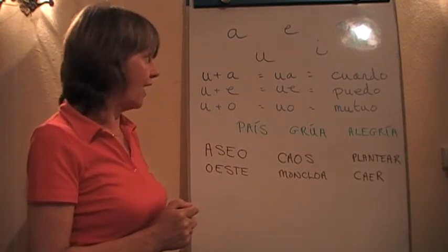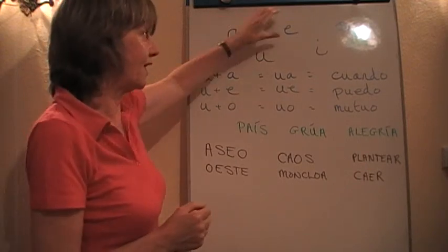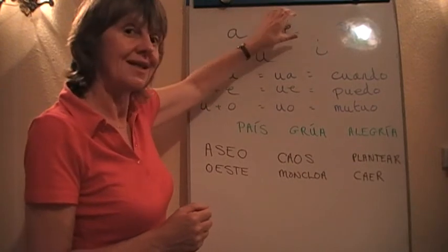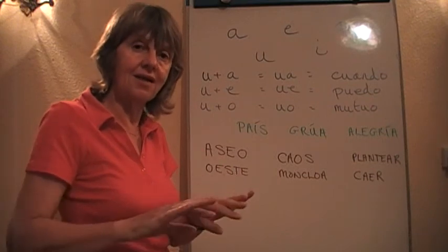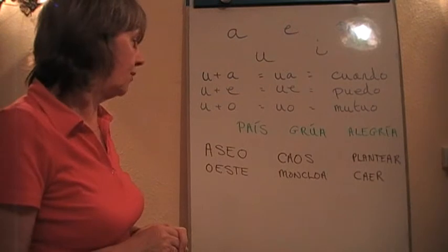Now, we haven't talked about what happens when you have a strong vowel next to a strong vowel. These are separate syllables. They don't do the linking of the weak and strong making one syllable. They maintain their distance, as it were, as separate syllables.